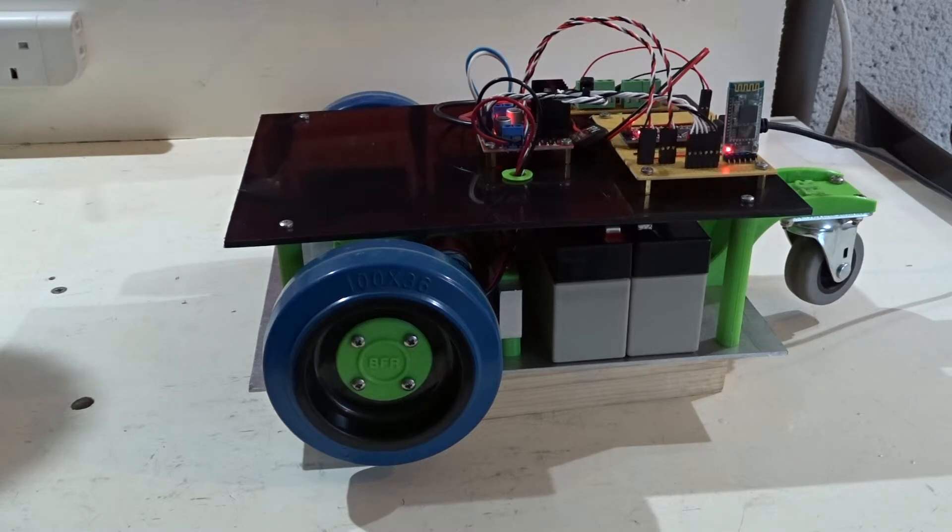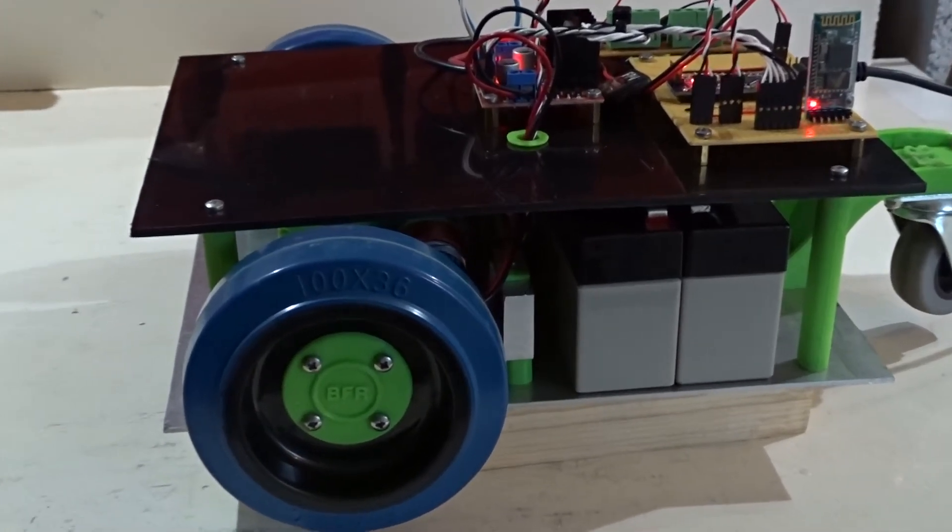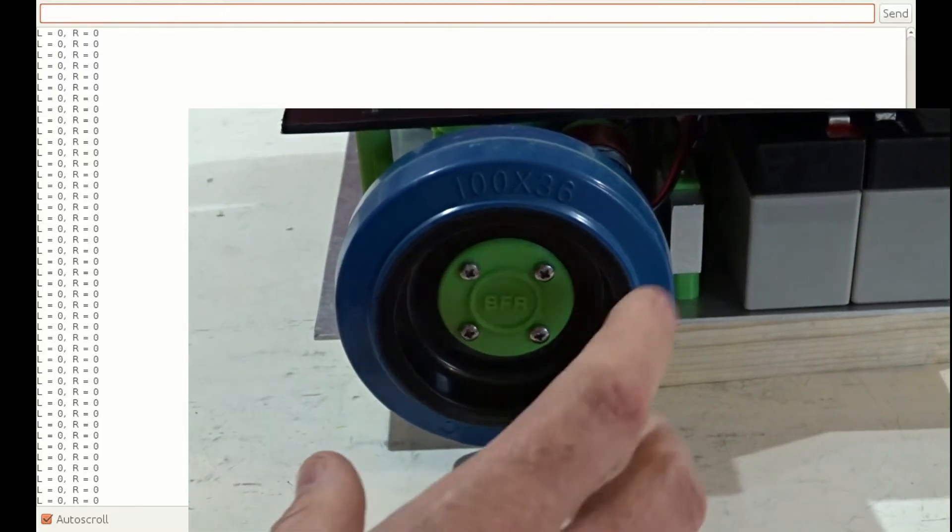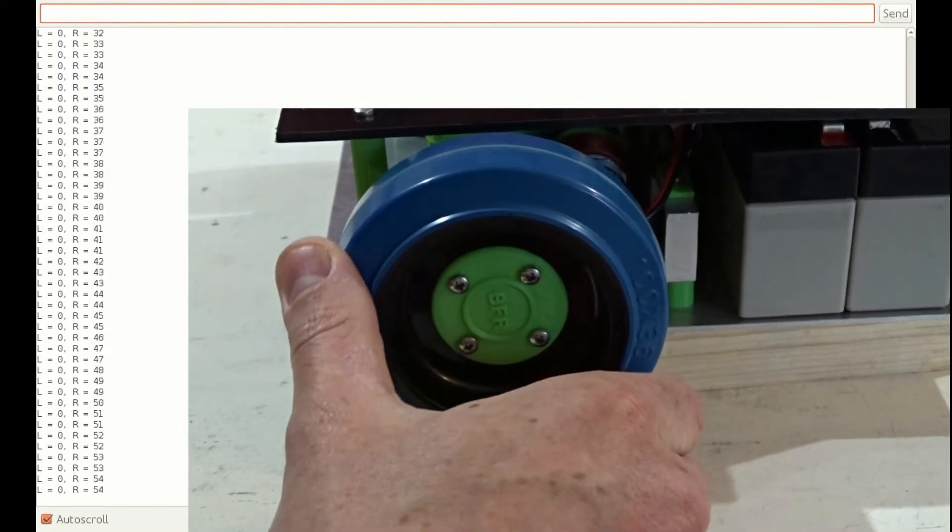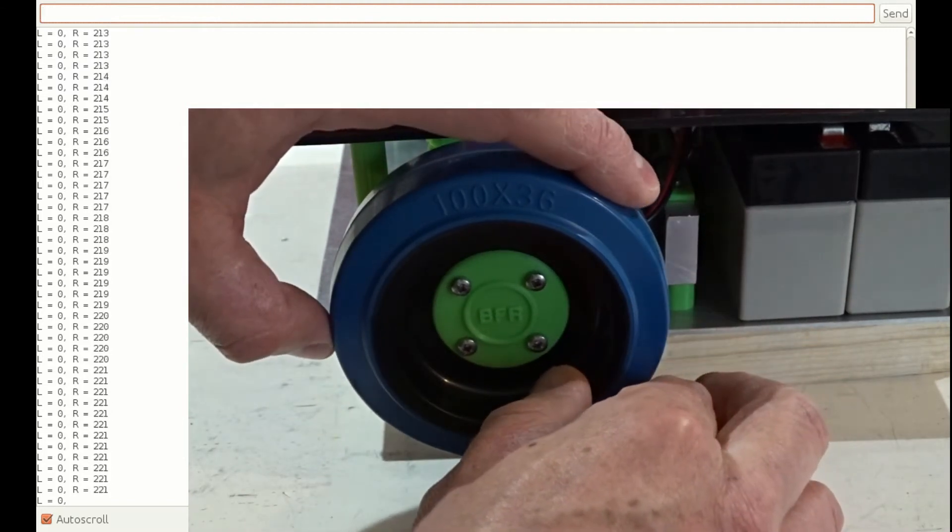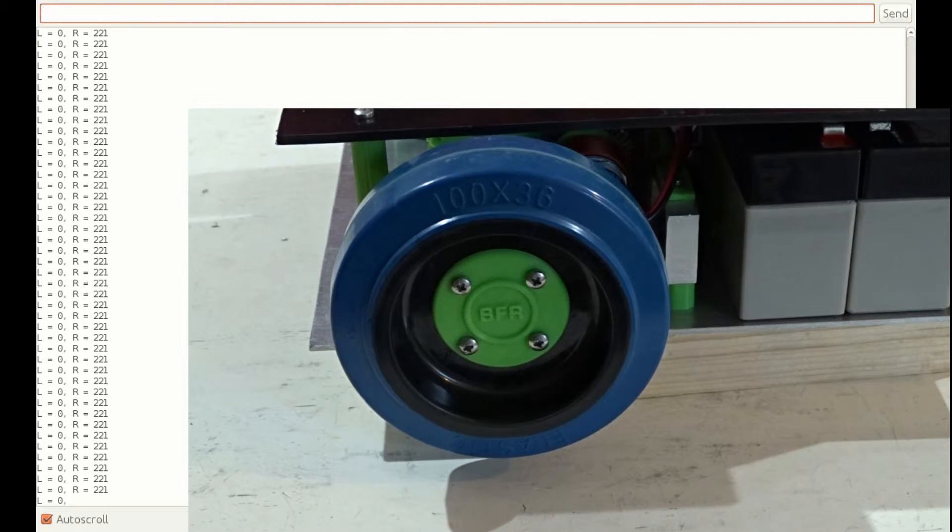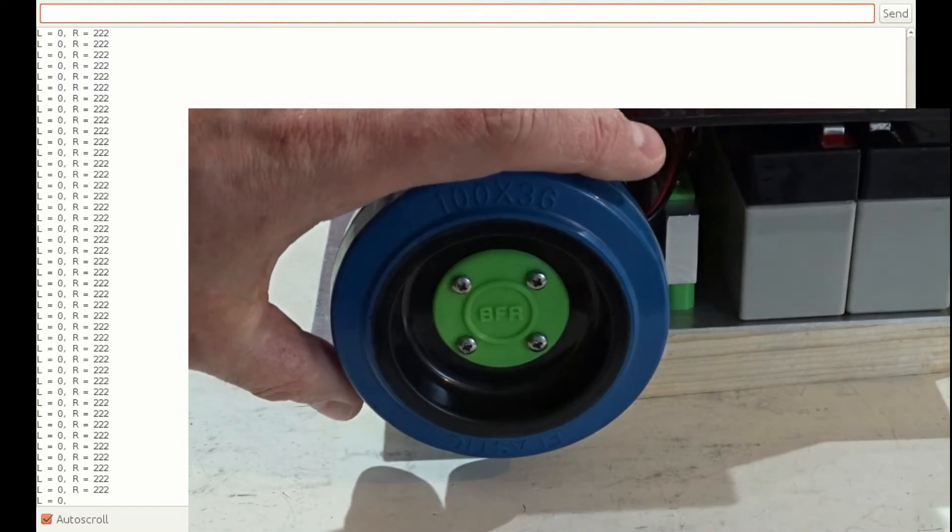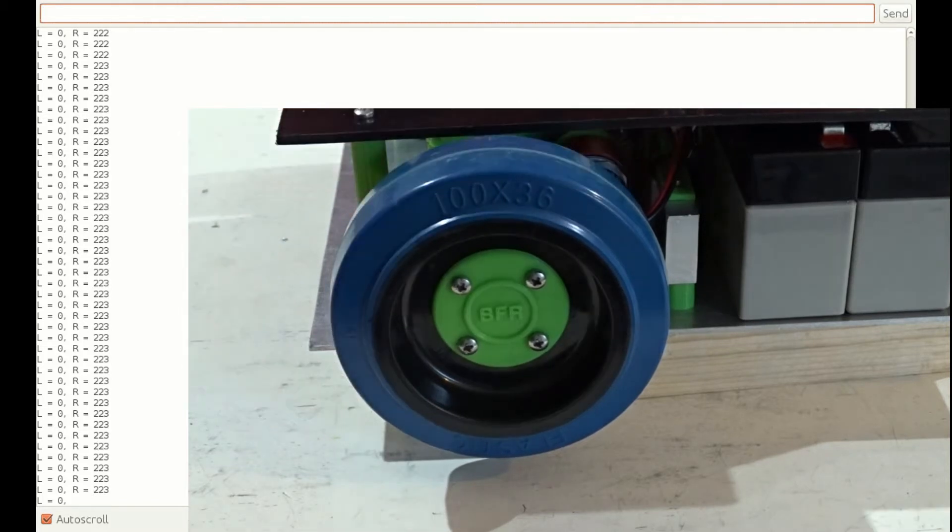So if you look at this wheel, the logo's pointing upwards at the moment. I'll zoom in on that. I'm going to do one turn and you can see the counts changing on the screen as we do that. So here we go. There we go. It's about back to where we started, give or take. And 221 counts. So give or take my inaccuracies of turning the wheel back to the right position. We're about right there.